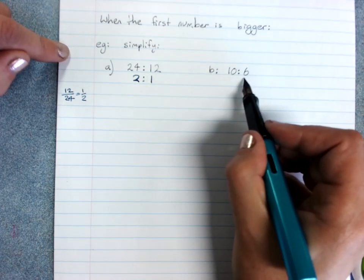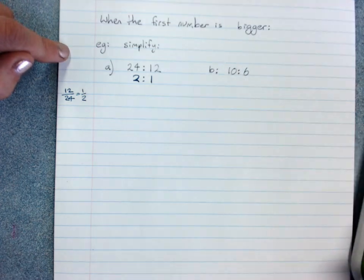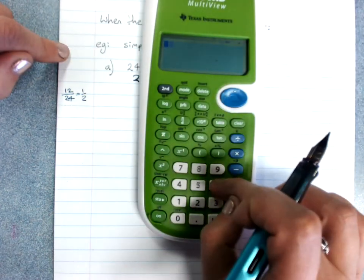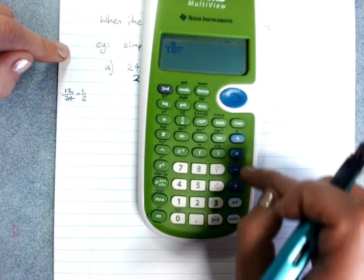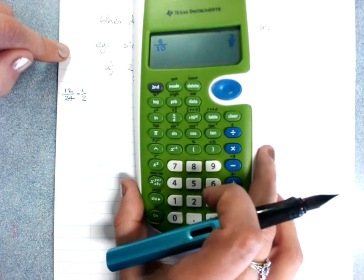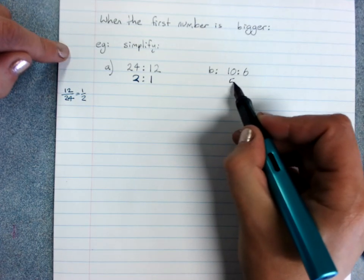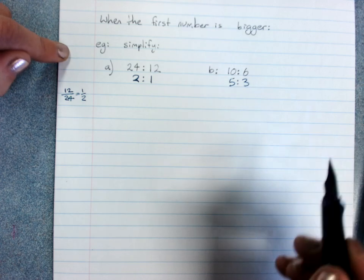So this one here, I can't do 10 over 6. But I can do 6 over 10. That's 3 over 5. And then I know I've got to put the big number first, 5 to 3.